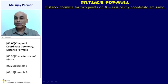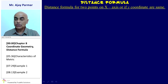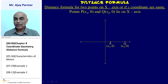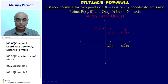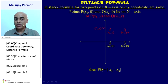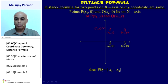Distance formula for two points if they are on the x-axis or if their y-coordinate is the same: if P is (x1, 0) and Q is (x2, 0), or P is (x1, y) and Q is (x2, y) with the same y-coordinate, then the distance PQ is the positive difference of their x-coordinates, that is |x1 − x2|.